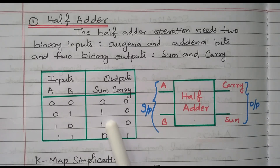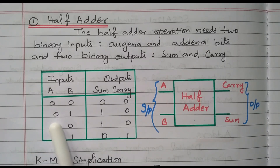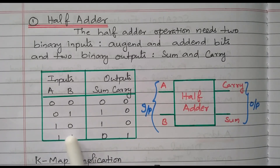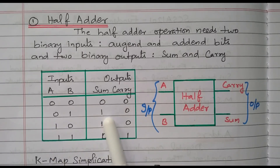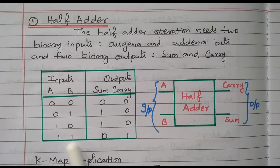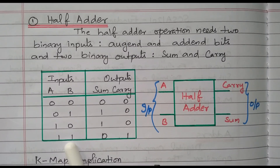From the table itself, there are two ones for sum. The input 0-1 corresponds to A̅B, and 1-0 corresponds to AB̅. So the sum is nothing but A̅B + AB̅, which is the XOR gate — A̅B + AB̅ is the XOR gate expression. For carry, there is only one 1 available at input 1-1, which means A·B. So the carry is nothing but A·B.